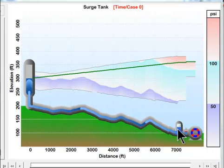When the pressure drops water comes out of the surge tank and replaces the water that's lost due to the pump trip and therefore can reduce the amount of transient pressure that we get. So let's play this and see what happens.